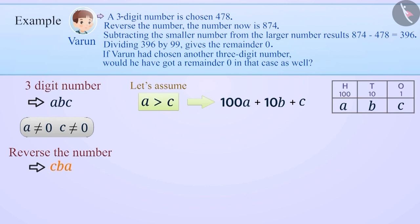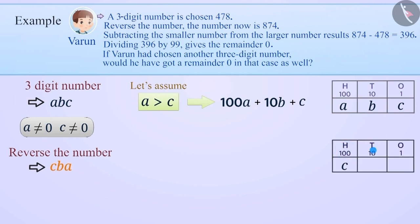If we reverse the digits, we get the number CBA. In this way, C is now at the hundreds place, B at the tens place, and A in the units place. We can write it as 100C plus 10B plus A.